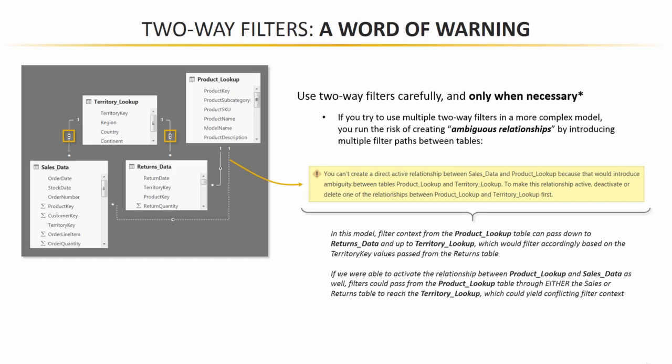So that filter context, product name equals Racing Helmet, passes down, flows downstream right to the returns table, and as a result, that returns data table filters down to only rows where that Racing Helmet was returned. Now, if that helmet was only returned in territories 7 and 8, because territory keys 7 and 8 were the only ones remaining in that filtered down returns table, that's the context that gets passed up to the territory lookup through that bi-directional filter and tells that territory lookup table, hey, there are only two territories that exist in the universe, 7 and 8.